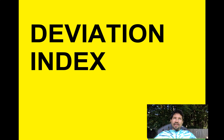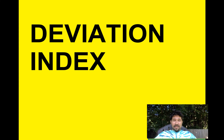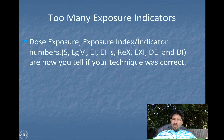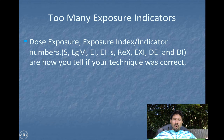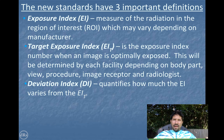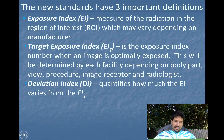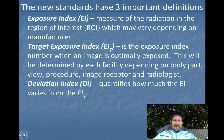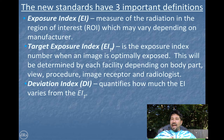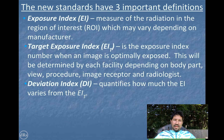The deviation index is an index that could be used on every exposure indicator, and it would let every vendor conform to the same kind of vocabulary. So we could take all these different exposure indicators — S numbers, log medians, and so on — and represent them all the same way. All of them would have an EI, all of them would have a target exposure index, which is the nominal: a perfect picture with just enough signal-to-noise to give us diagnostic quality images. No noise present, no excessive dose. And then we'd have a deviation index, meaning how far the indicator is from nominal.